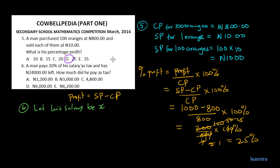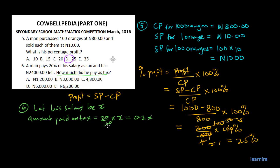The man pays 20% of his salary as tax. The amount paid on tax equals 20% times X, which equals 0.2X — because 20 divided by 100 is 0.2. To find the amount paid as tax, we first need to find the value of X.